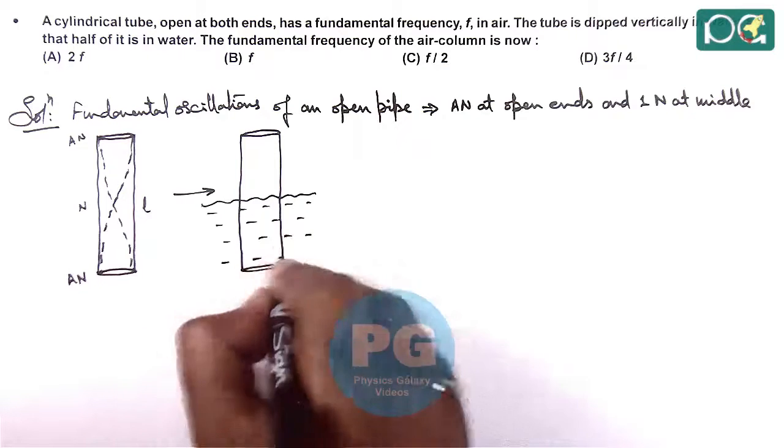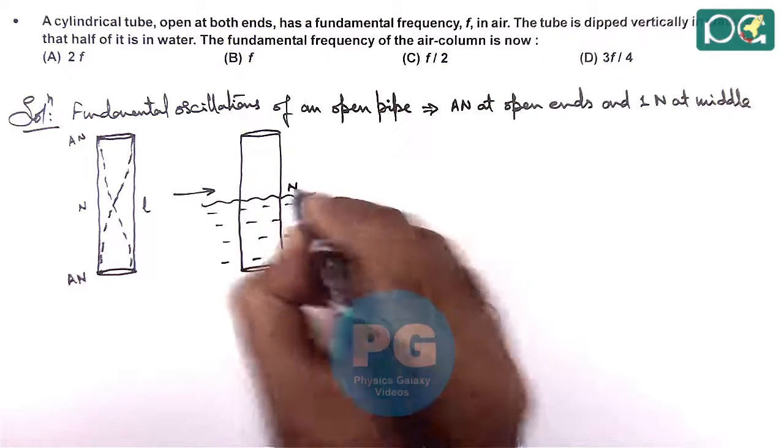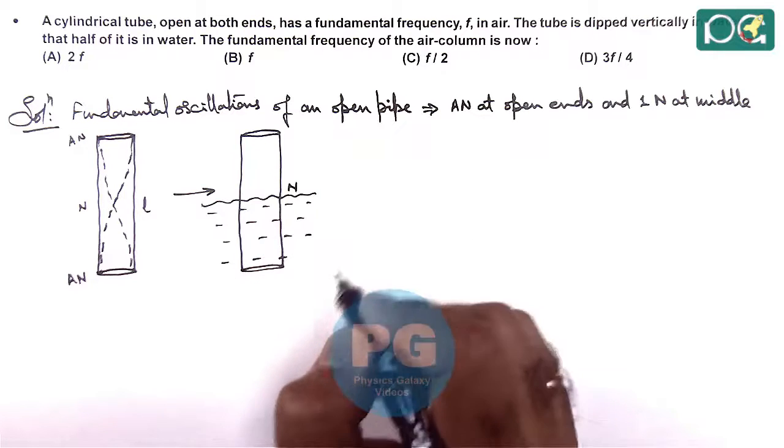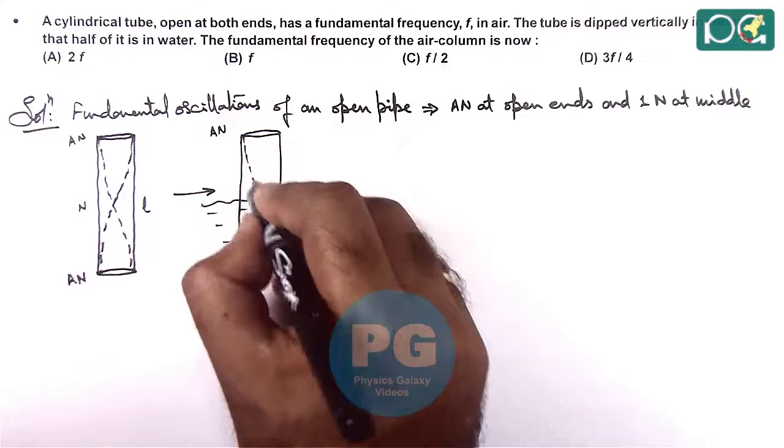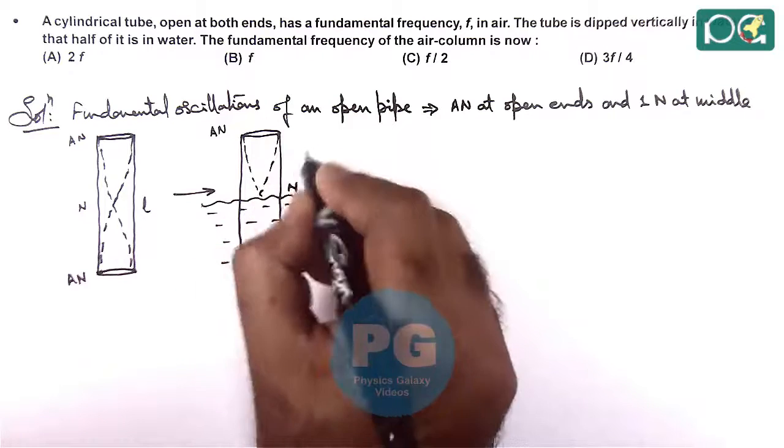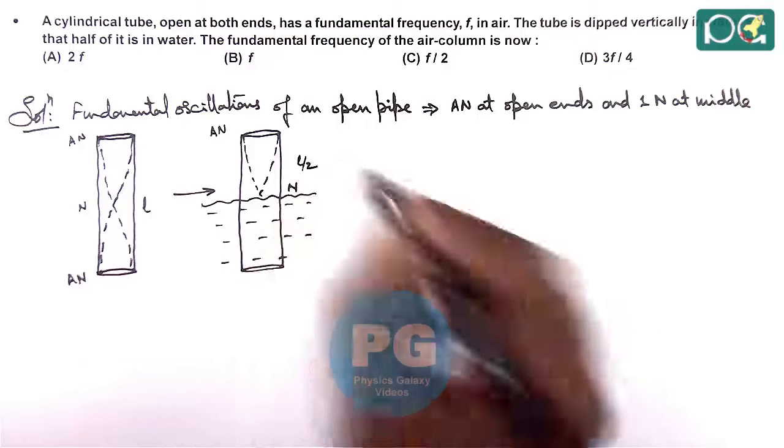We can see the water behaves like a closed end, so always a node is produced over here, and anti-node is there at the open end. The situation would be like this, and length of pipe reduces to L by 2.